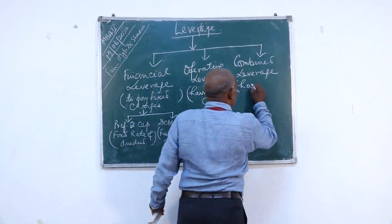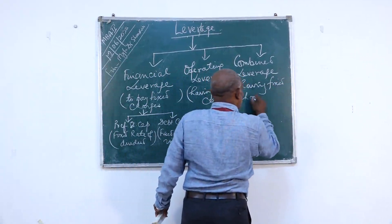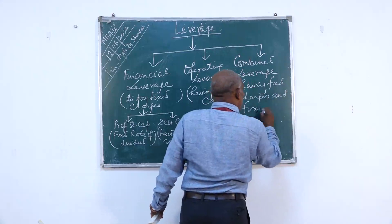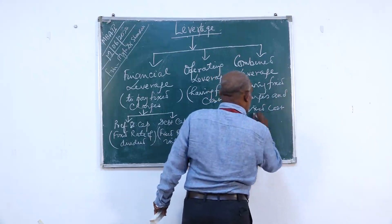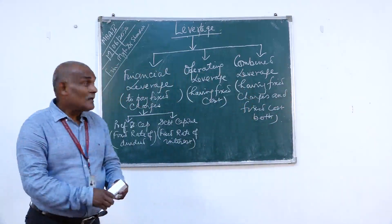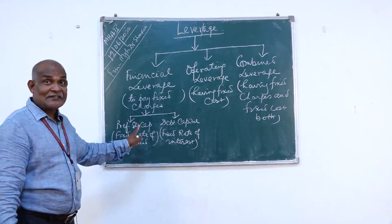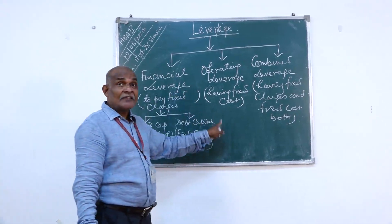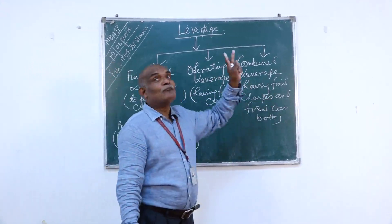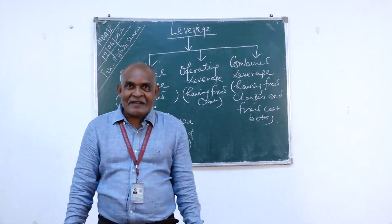Financial leverage has no fixed costs, only fixed charges. Operating leverage has no fixed charges, only fixed costs. Combined leverage has both fixed charges and fixed costs. Is that clear?